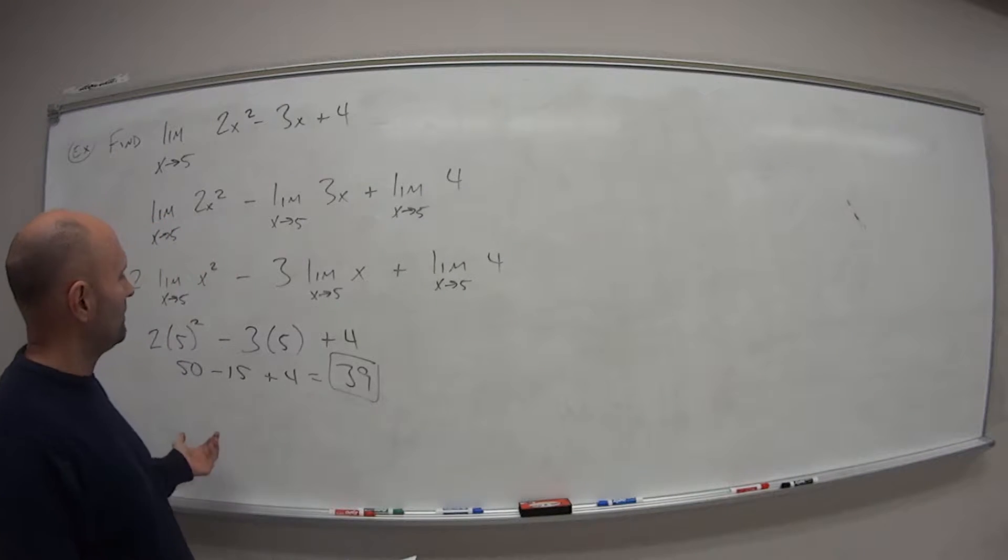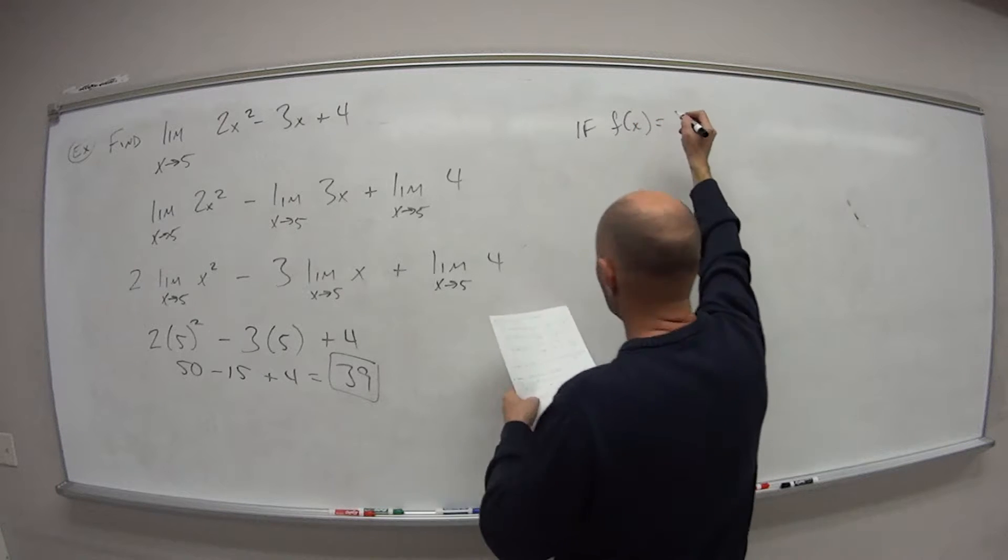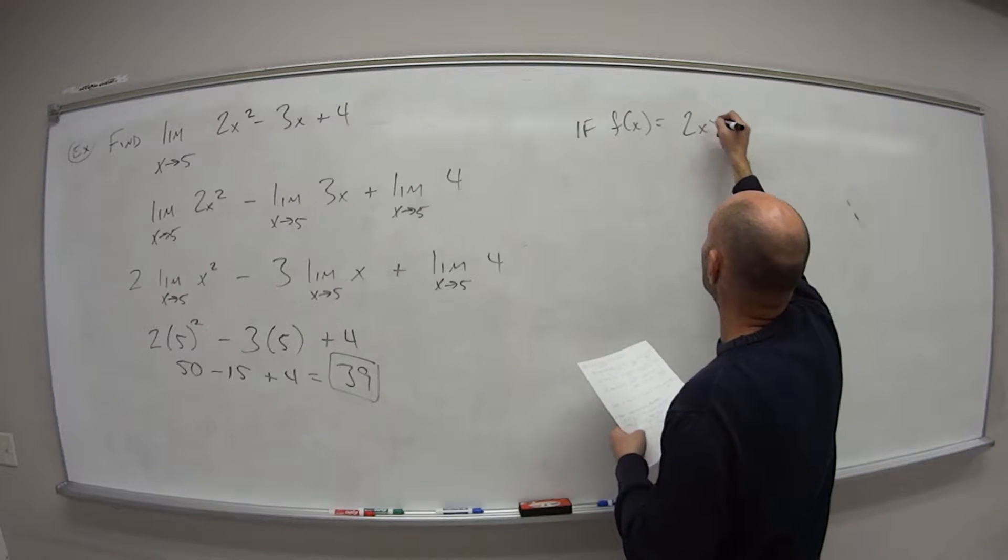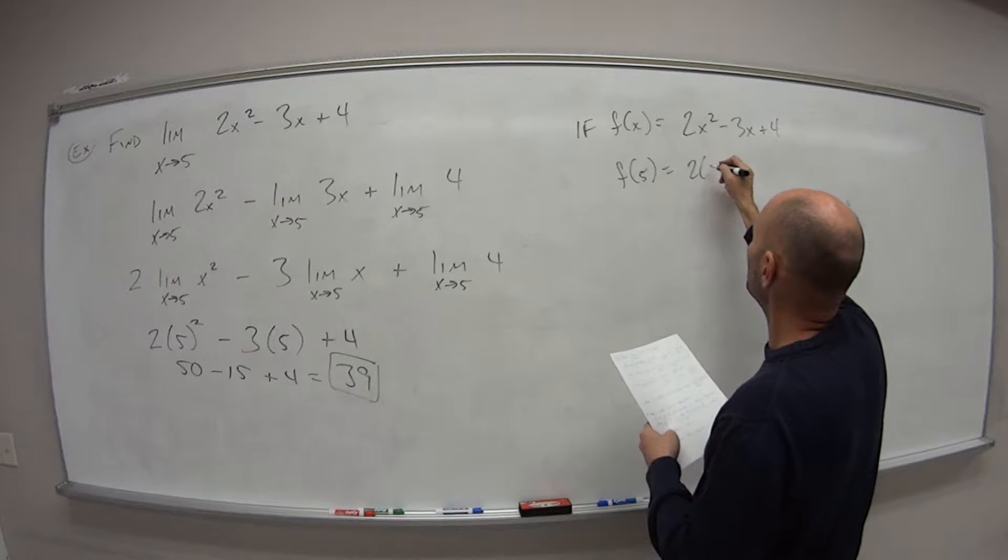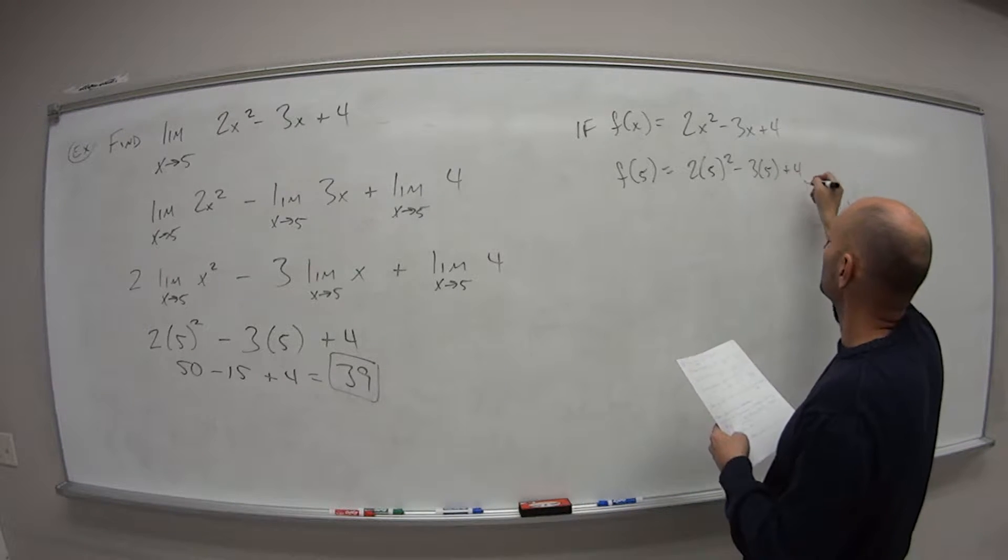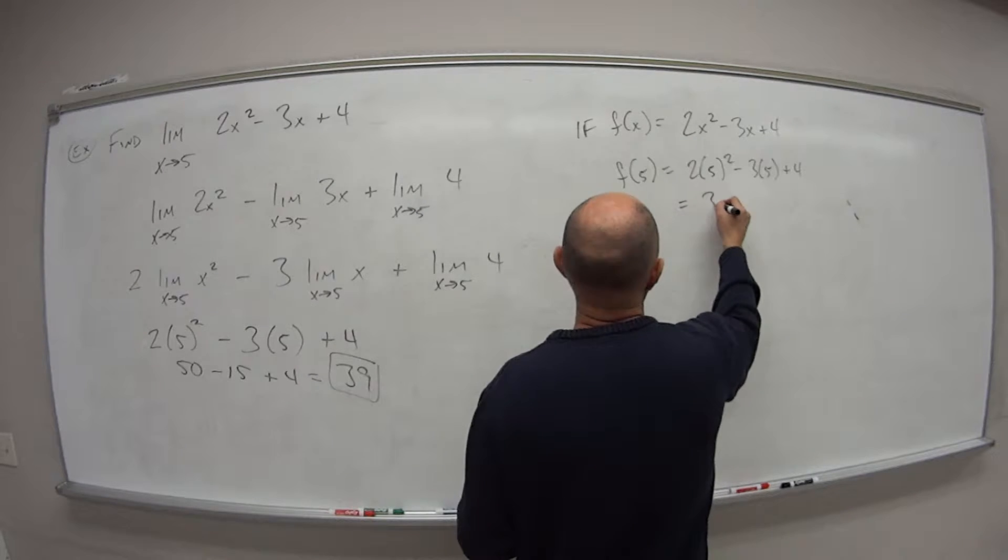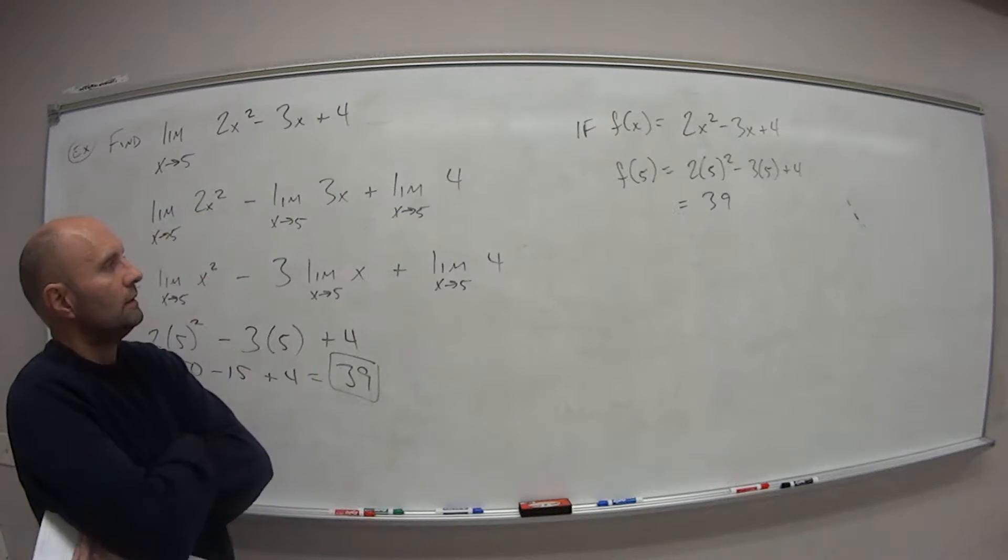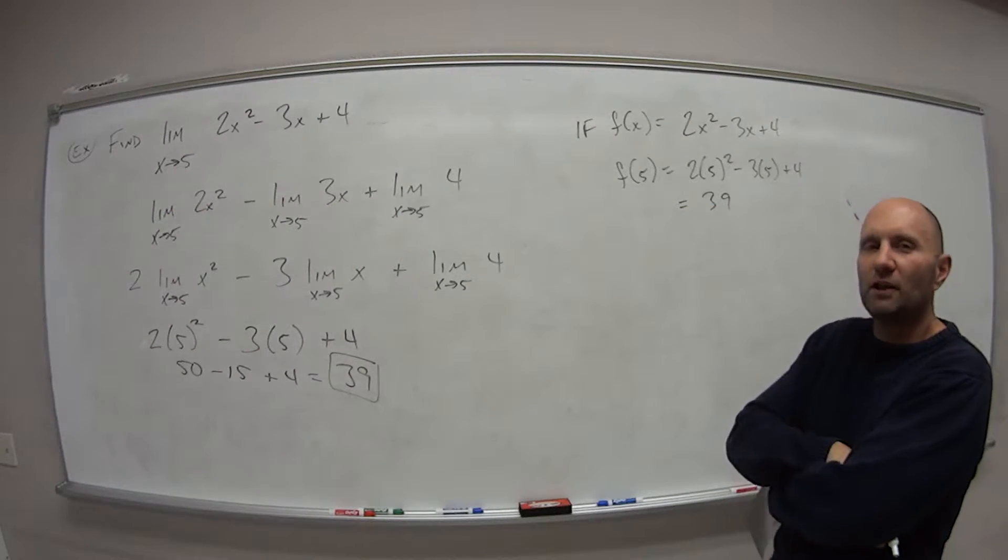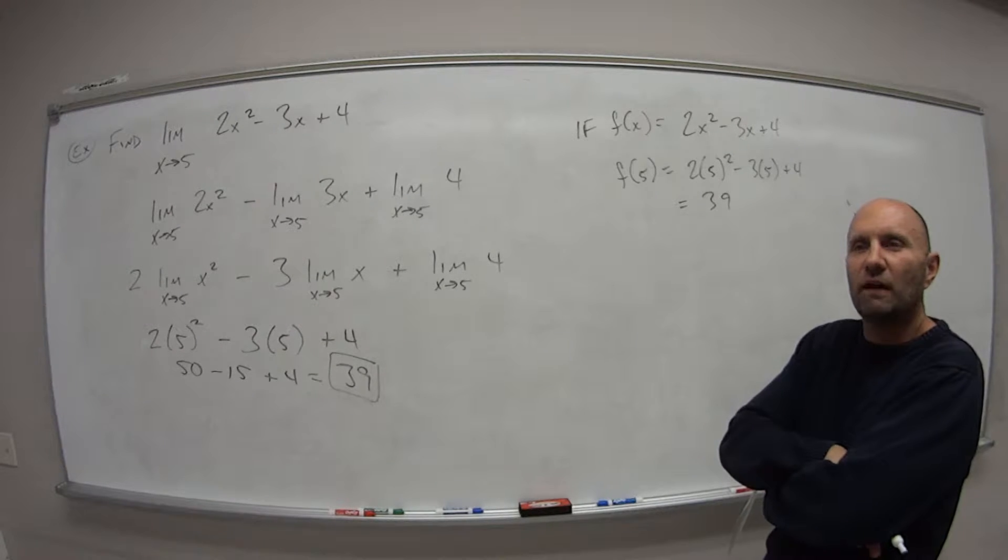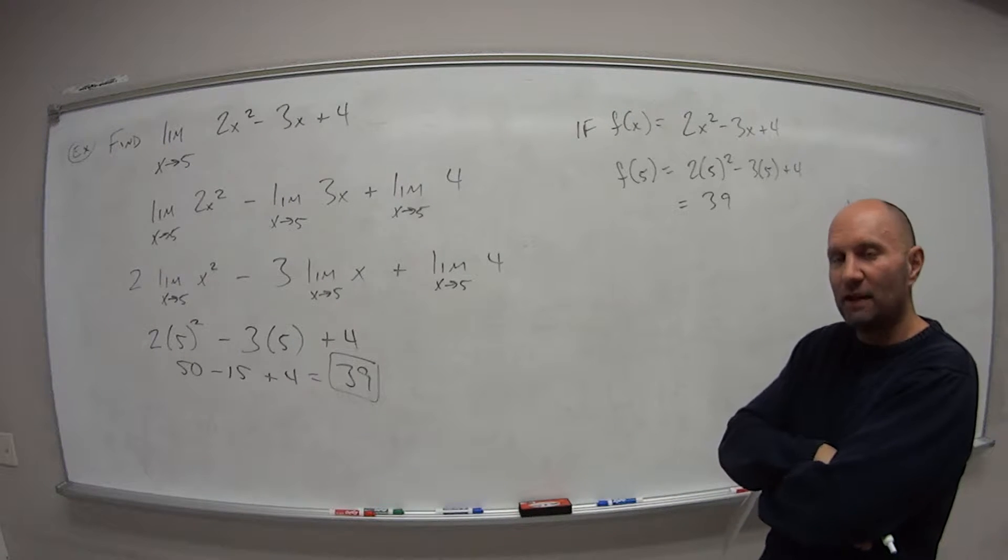So you're probably sitting there screaming, wait a minute, why don't we just plug in five? Let's look at that. So if f of x is equal to that function 2x squared minus 3x plus 4, f of five is what? Well, it's 2 times 5 squared minus 3 times 5, plus 4, which is what we have down here at this line, right? So this is equal to 39. Same values. So now you're sitting there saying, wait a minute. You've been telling us all along we can't just plug in a, because we're not worried about what that value of a actually is. We're only worried what's the limit as we approach from the left and from the right. And that is still 100% true.